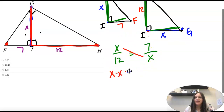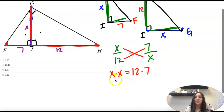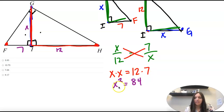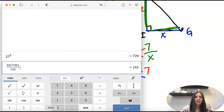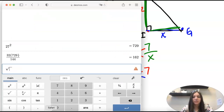So when we do our side ratios we have x to 12 equals 7 to x. We cross multiply: x times x equals 12 times 7, so x squared equals 84. To get rid of a square you take the square root of both sides, and the square root of 84 is 9.17 rounded.